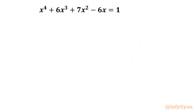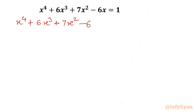Let's get started by writing all terms to the LHS only. I will write: x⁴ + 6x³ + 7x² - 6x - 1 = 0.